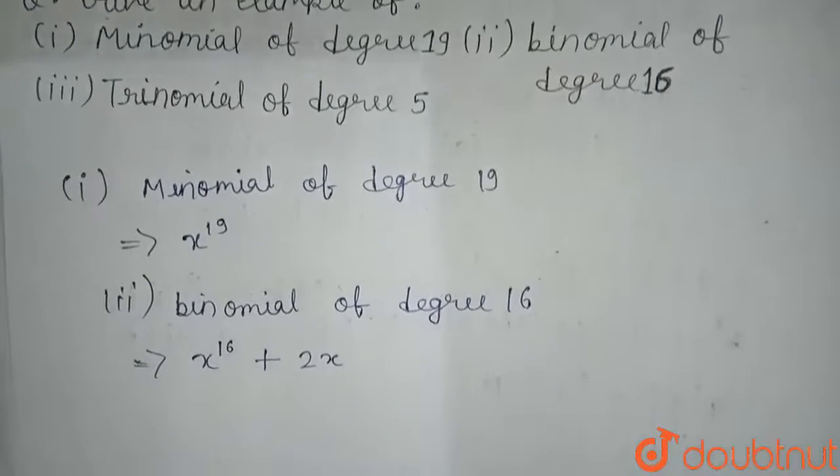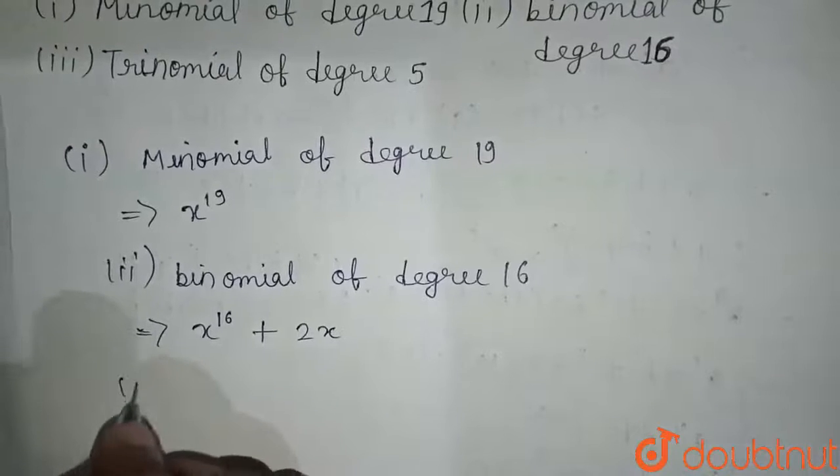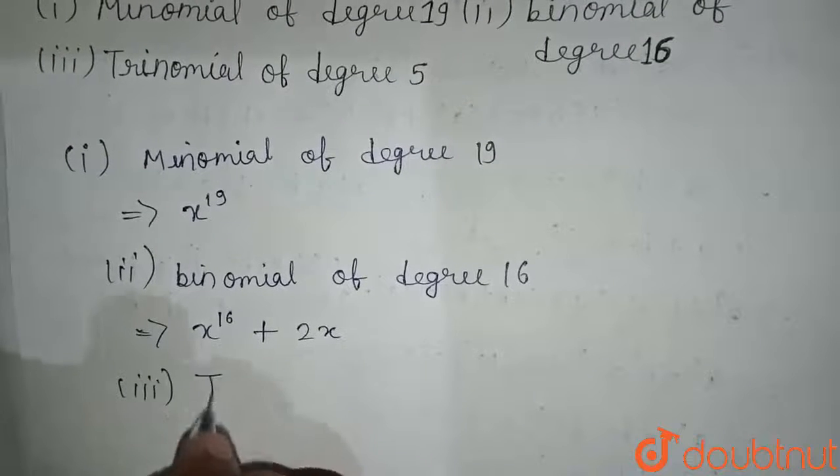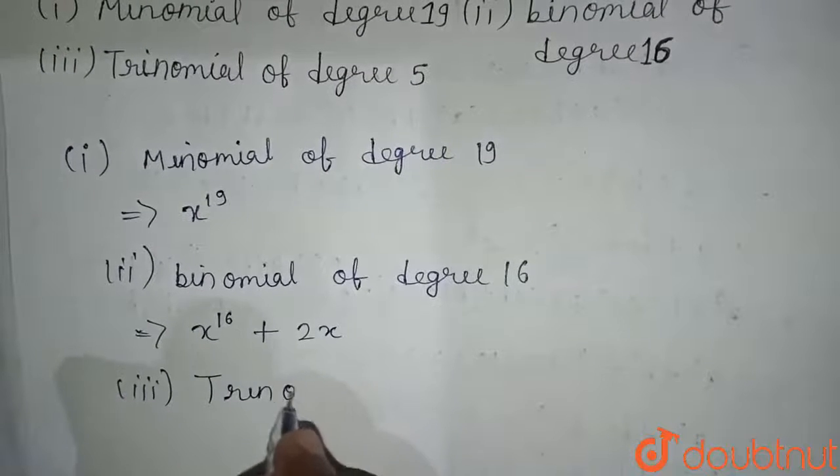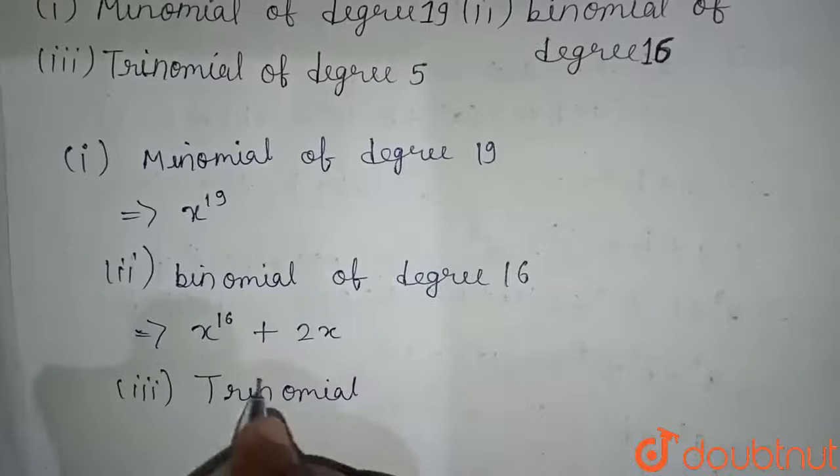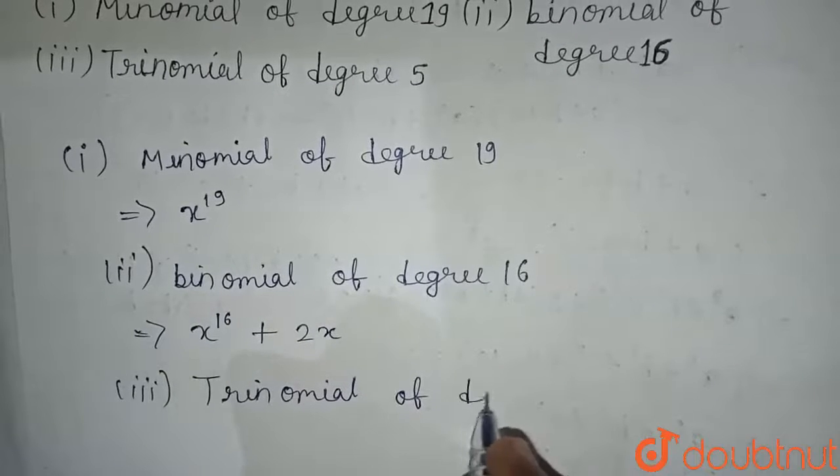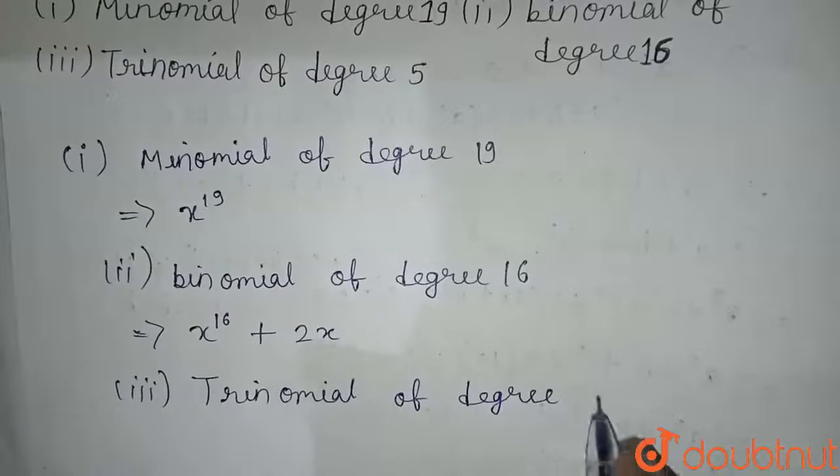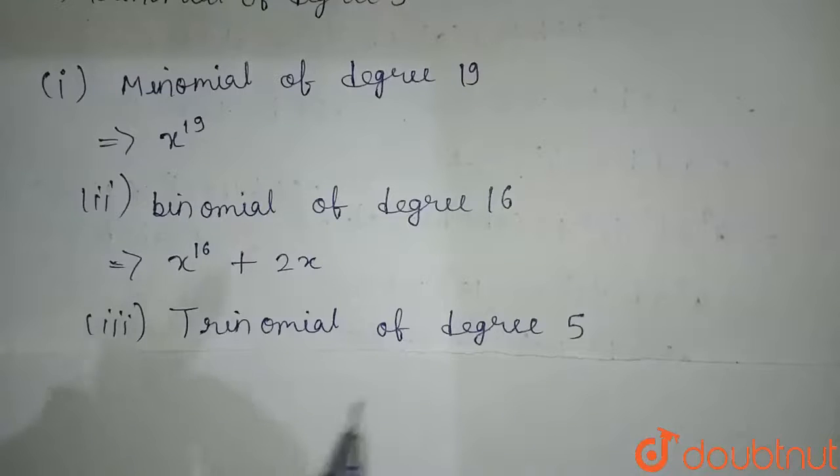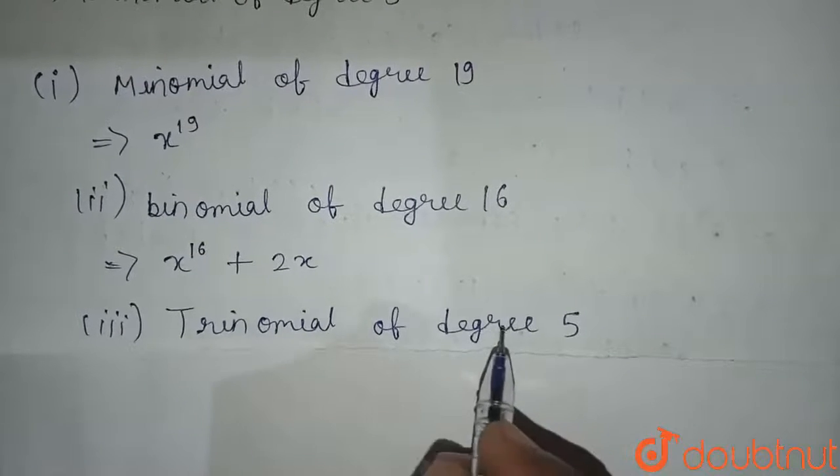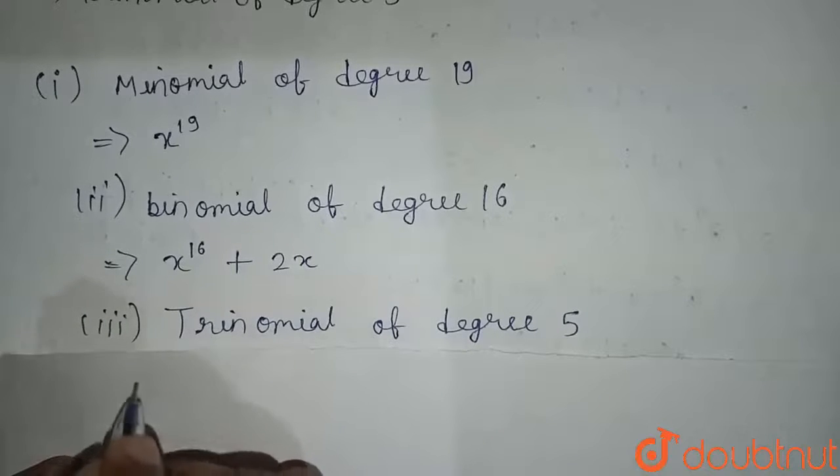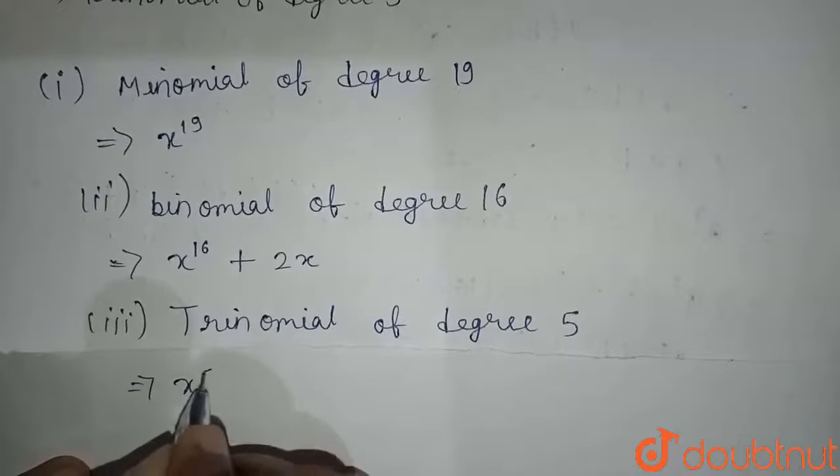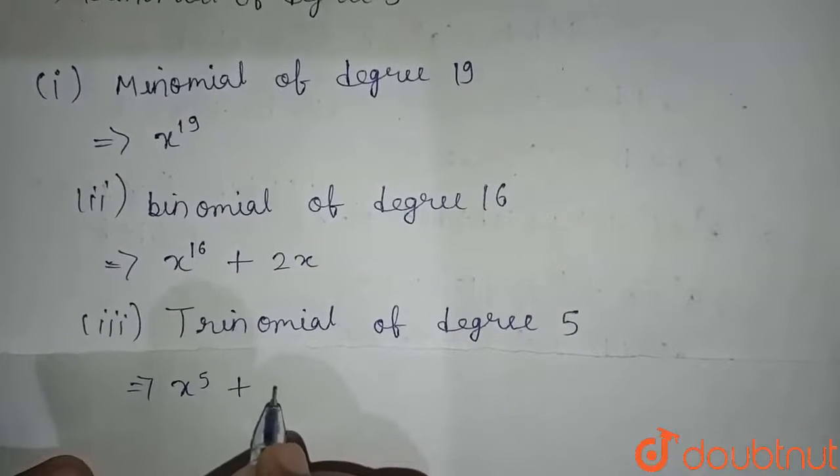Third, trinomial of degree 5. Trinomial of degree 5 means three variables and the highest degree power should be 5. So we'll take here x to the power 5 plus x squared plus x. This is the trinomial of degree 5.